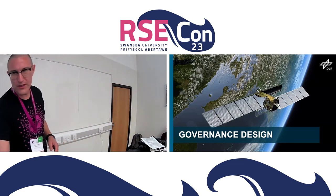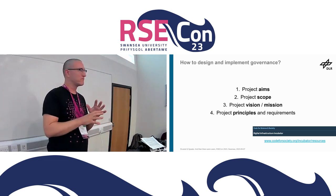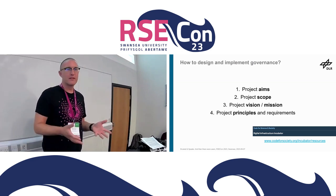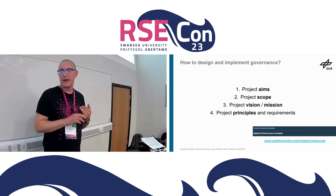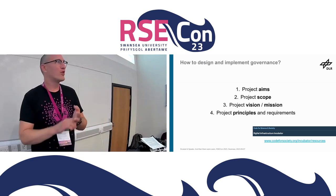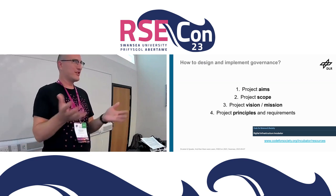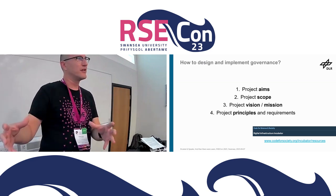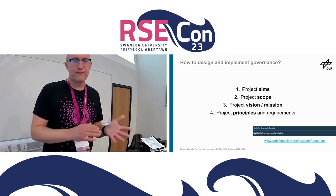The big question for me was how to actually get from having nothing but a fuzzy idea of what we want to do, to having a formalized, well-designed governance for a specific project. I think this depends on four things: the project aims, the project scope, a mission or vision if you have such a thing, and the community you are expecting to work with.